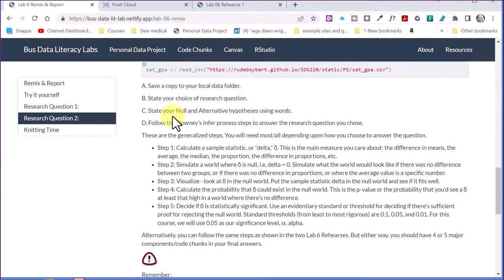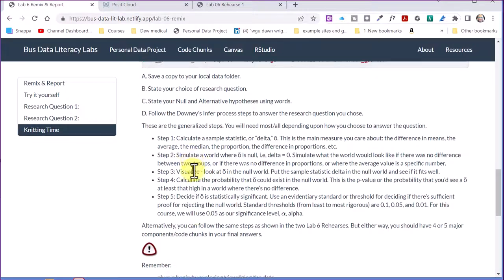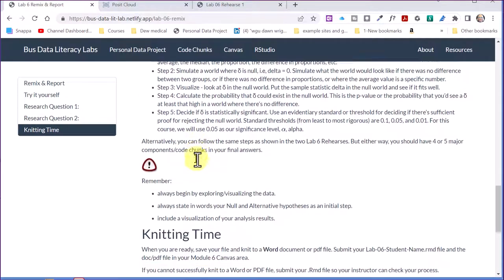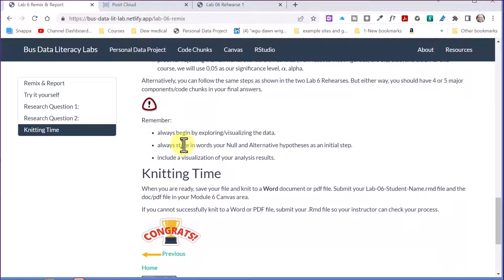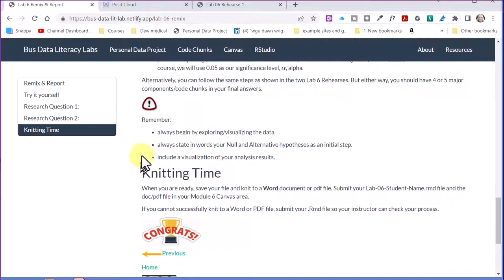And traditionally, we'll use the 0.05, which is 5%. We don't want to be wrong more than 5% of the time. So that would be the significance level, as you should have said as well. And then it says to follow the Downey Infer process, and gives you the steps there, the growth steps that you could go through and follow that.